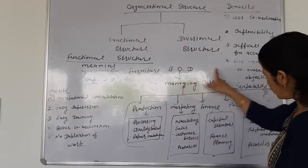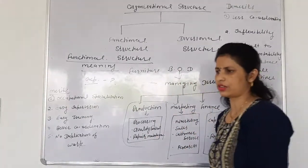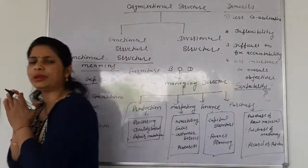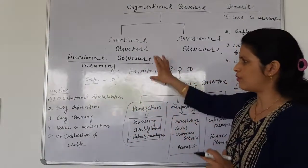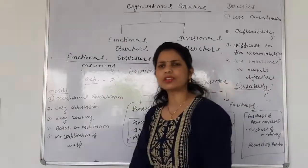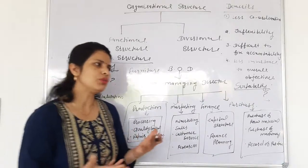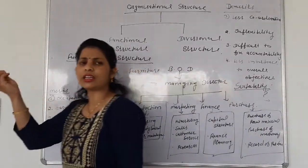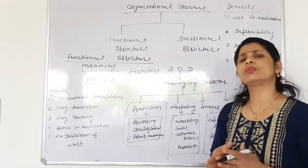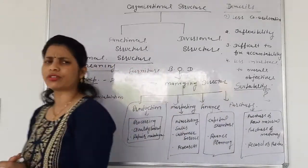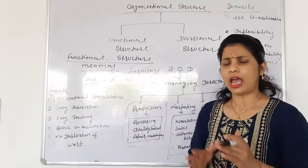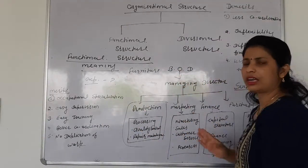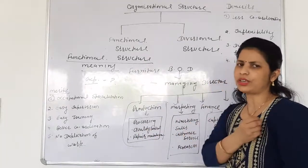This structure is called functional structure. In functional structure, we have to produce a product and for every function performed, a separate department is created. Functional structure means if in my business I create departments based on functions, then I have benefits. The first benefit is occupational specialization — how most products of functions are handled.